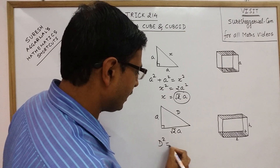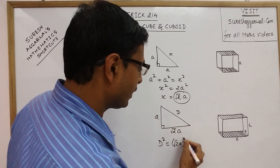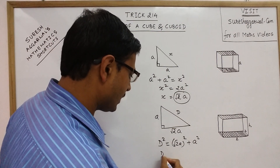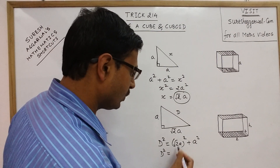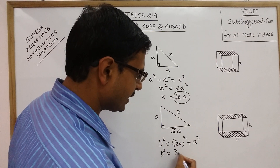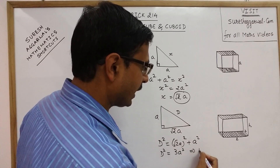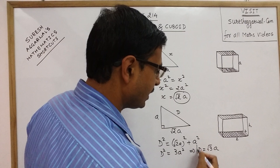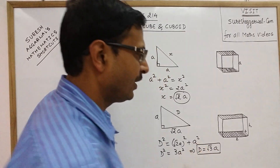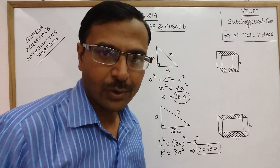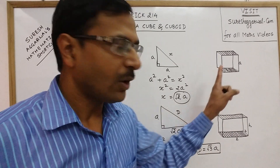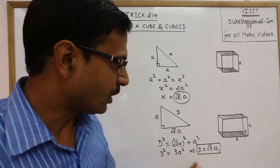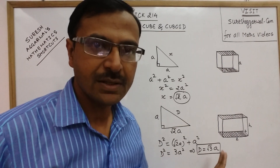D² will be equal to (√2·A)² + A². So if you solve this, D² = 2A² + A² = 3A². So the diagonal of the cube will come out to be √3·A. This is the formula for finding the diagonal of a cube of side A — the diagonal of the cube is √3 times the side.